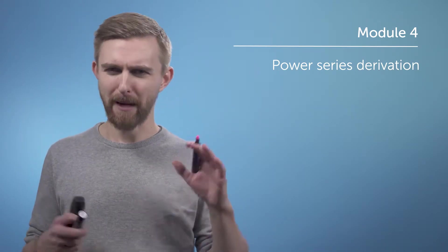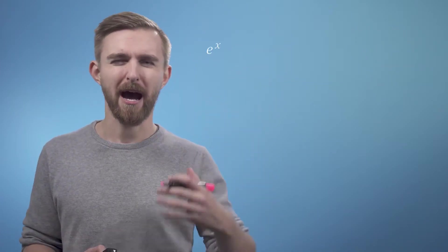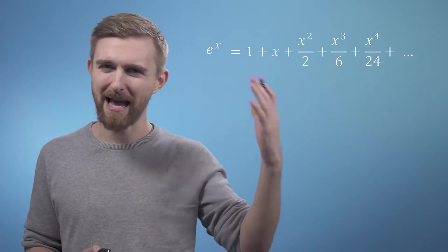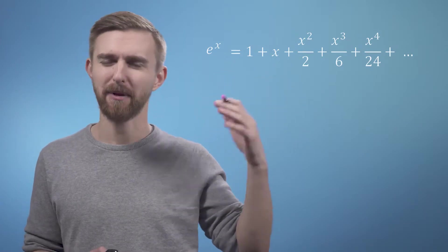Just to warm up by blowing your minds, we can take the function e to the x, which we met earlier in the course, and re-express it as the series 1 plus x plus x squared over 2 plus x cubed over 6 plus higher order terms.